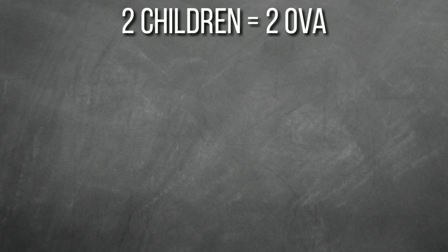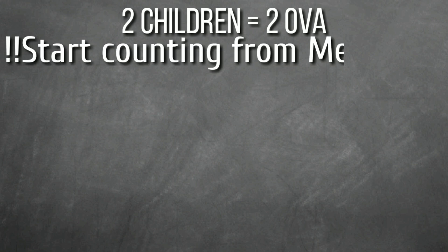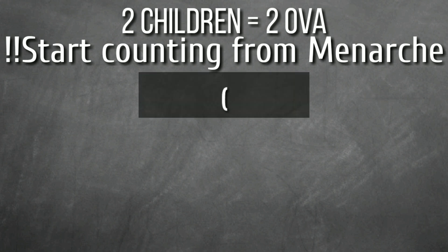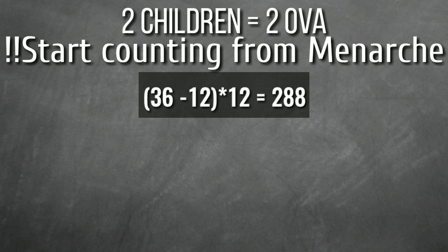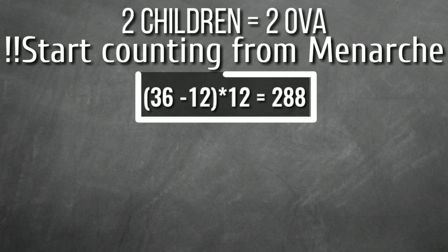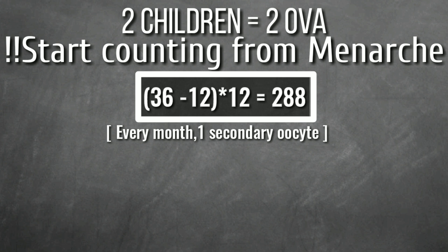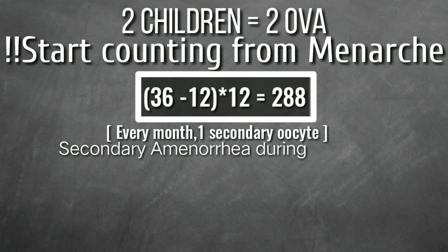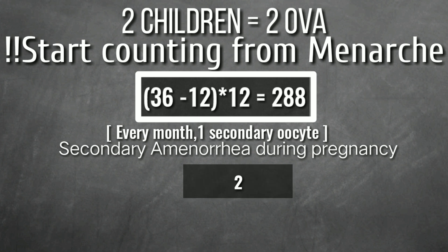Since her age is 36 and menses began at 12, the maximum possible number of secondary oocytes is (36 minus 12) × 12 = 288, because it has been 24 years since menarche with 1 secondary oocyte produced each month. However, 2 children means no secondary oocytes were produced for 9 months per pregnancy, so we subtract 18 from 288, giving 270.